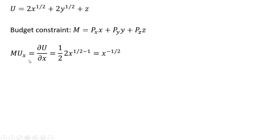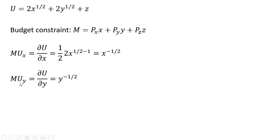First, we're going to find the marginal utility of x. We take the exponent on the x term, bring it down in front, and subtract 1 from that exponent, and this simplifies down to the following. The marginal utility of good y is a similar partial derivative — this time we get y raised to the minus one-half power. And the marginal utility of good z is just 1.